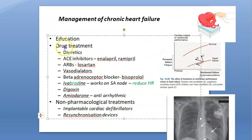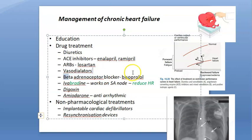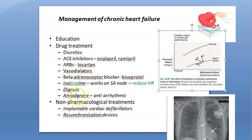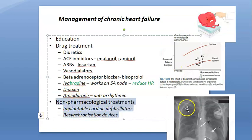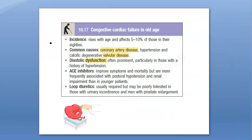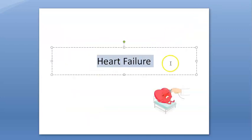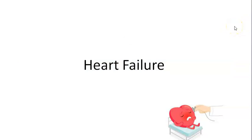For chronic heart failure: educate patients and relatives about causes and the importance of taking diuretic therapy correctly, otherwise acute-on-chronic heart failure can occur. Drug treatment includes diuretics, ACE inhibitors like enalapril and ramipril, ARBs like losartan, vasodilators/nitrates, beta blockers like bisoprolol, ivabradine to reduce heart rate, digoxin, and amiodarone as an antiarrhythmic. A defibrillator resynchronization device may also be implanted. For elderly patients, ACE inhibitors and loop diuretics are given. This completes our full discussion on heart failure.